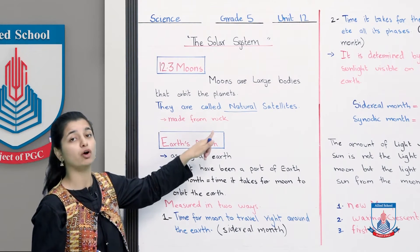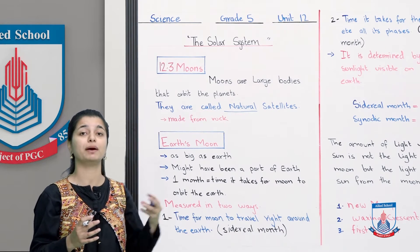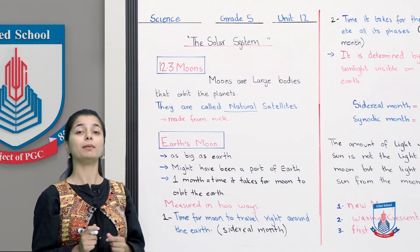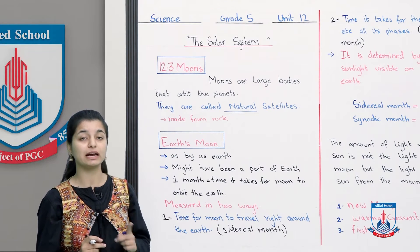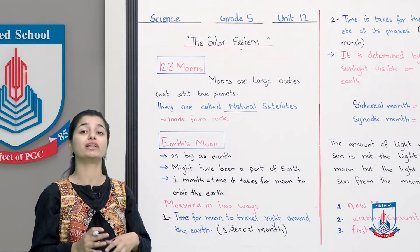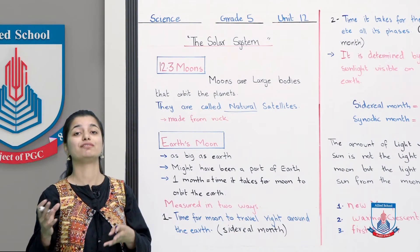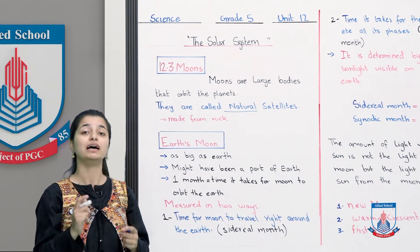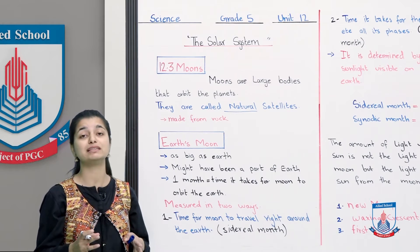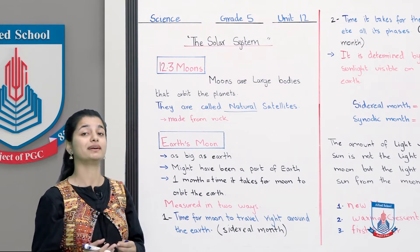Hum kehte hai ki yeh made from rock hai, pattharon se bani hai, jaise asteroids hote hai, rocks hote hai, but moon is relatively different. Aur ek aur baat ye hai ki earth ka ek moon hai, lekin agar aapko yaad ho, humne planets mein padha tha ki some planets have more than up to 60 moons. So moons different hote hai for different planets. Earth ke girth sirf ek hi moon orbit kerta hai, jabki different planets ke girth takriban 60 se 70 moons bhi orbit kerte hai.